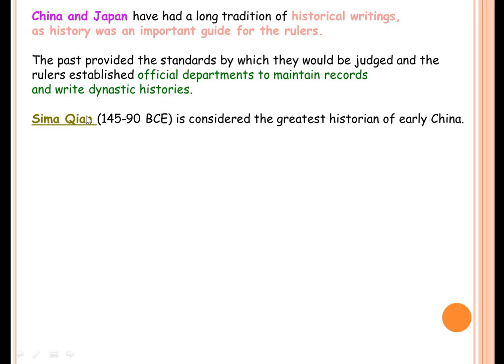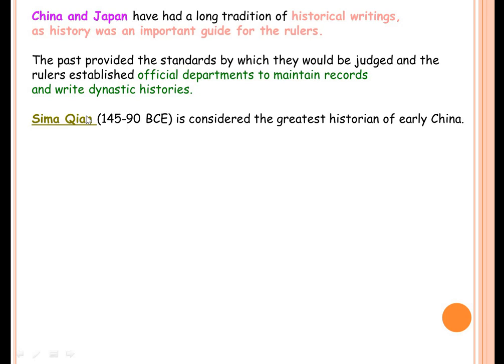Sima Qian is the greatest historian of early China — a very important point. In Japan, there was a lot of influence felt from Chinese culture, giving history a similar importance. One of the earliest acts of the Meiji government was to establish in 1869 a bureau to collect, write, and record what was happening over time — a victor's version of the Meiji Restoration. There was a great deal of respect given for the written word, and literary ability was highly valued.